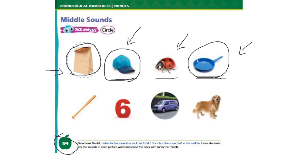Okay, now you need to do the bottom row on your own. This is a bat — B-A-T. This is number six — S-I-X. And this is a van — V-A-N. And the last one is a dog — D-O-G.